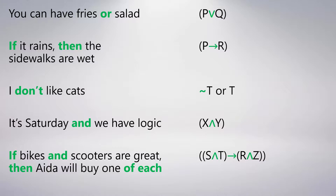Here was the list of sentences we looked at last time, and this is how we symbolize them in official notation. But immediately you should have been suspicious and realized that a lot of the official notation rules aren't really necessary. For example, for 'you can have fries or salad,' why do I need the brackets around P or Q? Why can't I just have P or Q with no brackets? The same for P arrow R. And for 'it's Saturday and we have logic,' why have brackets around X and Y? Doesn't X and Y on its own capture the meaning? Even for 'if bikes and scooters are great, then Ada will buy one of each,' it seems I can probably remove some brackets. So well-formed formulas add a lot of brackets — but are they all really necessary?